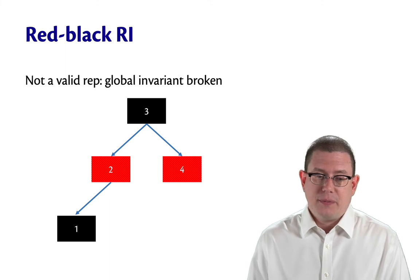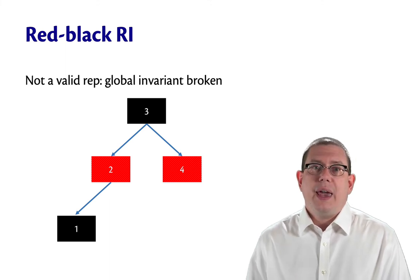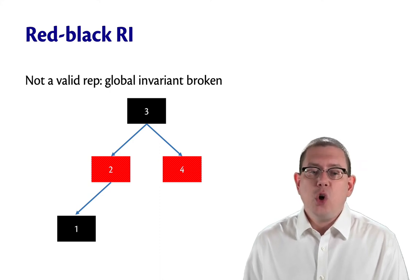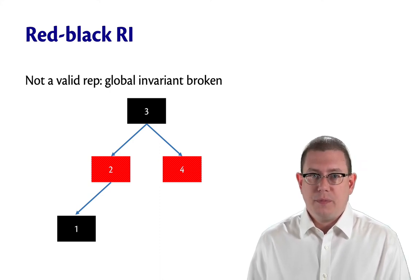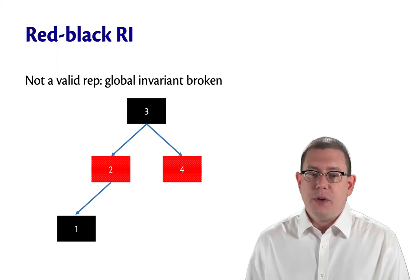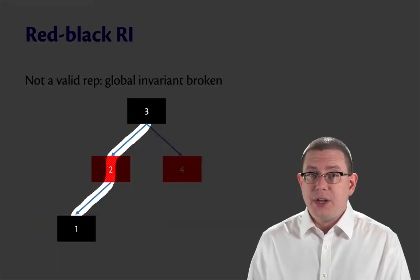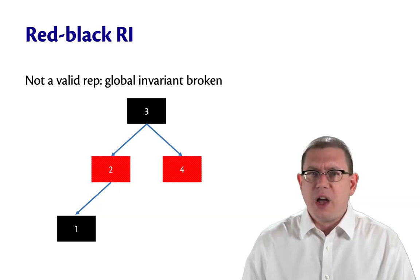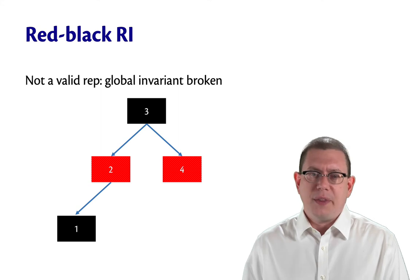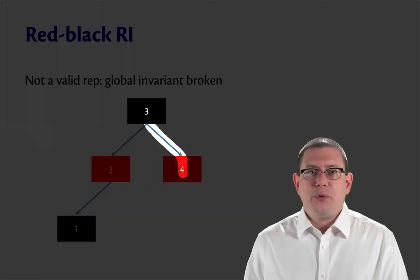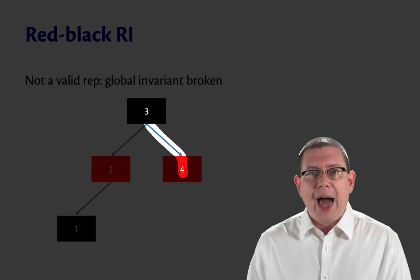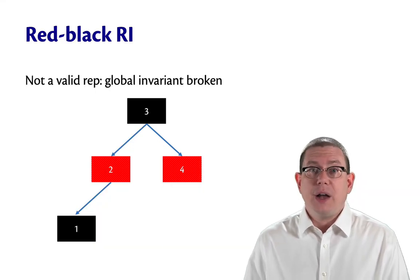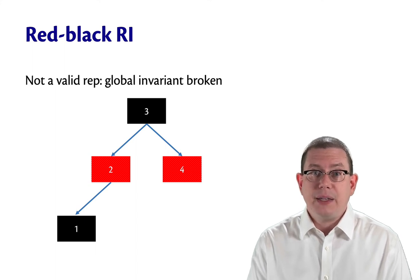Let's look at some examples. Here's a candidate for a red-black tree, but it fails the rep invariant because the global invariant is broken. On the path going down the left of the tree, we've got two black nodes. And implicitly, some black leaves below that black node, but we're mostly not going to think about leaves. We don't even draw them. On the right path down through the tree, we only have one black node. So, the black lengths of those paths are not the same. That violates the global invariant.